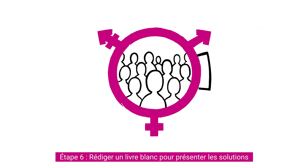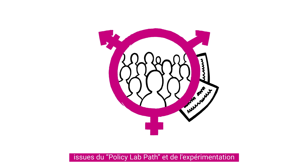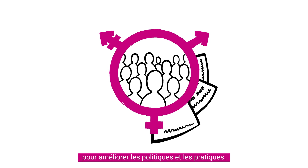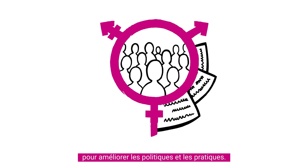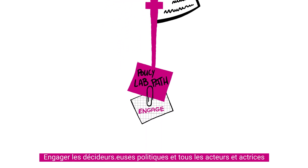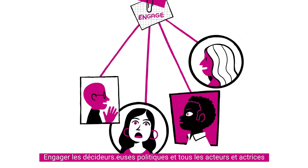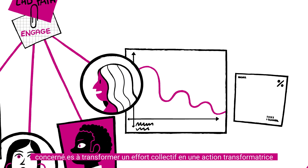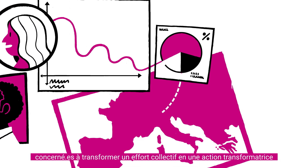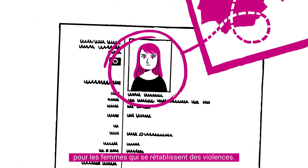Step 6: Write a white paper to present the solutions stemming from the Policy Lab Path and the trial to improve policies and practices. Engage policy makers and all relevant stakeholders to turn a collective effort into a transformative action for women recovering from violence.